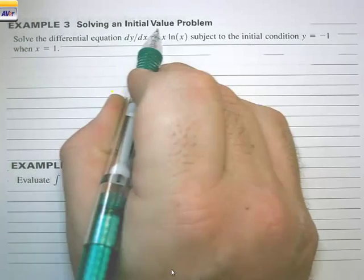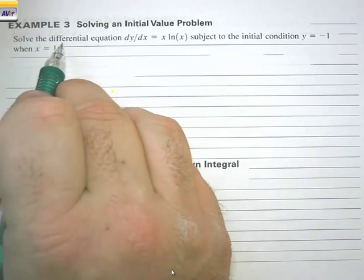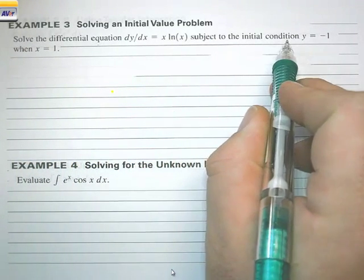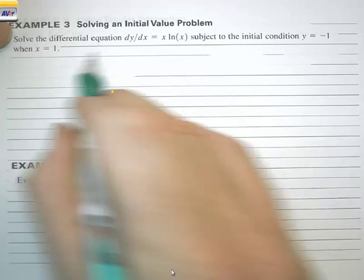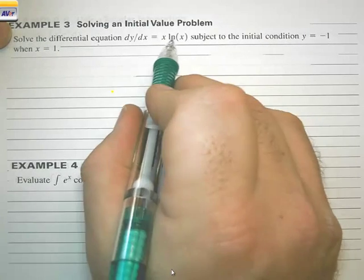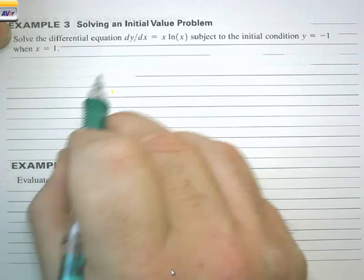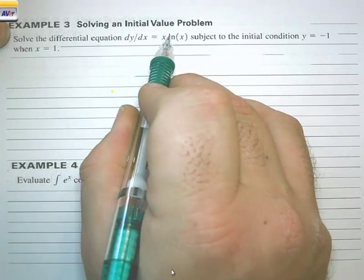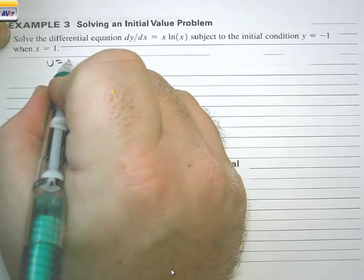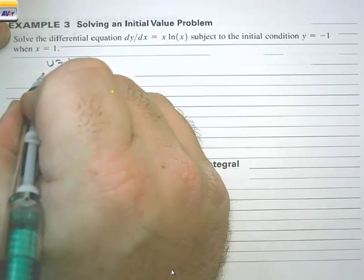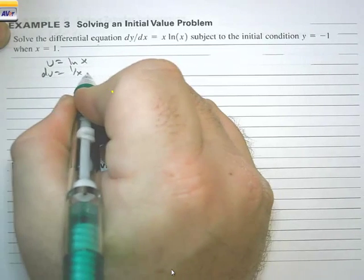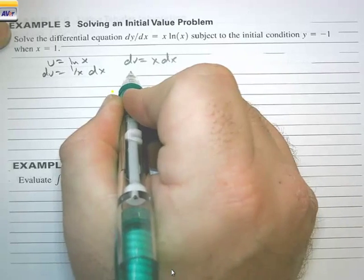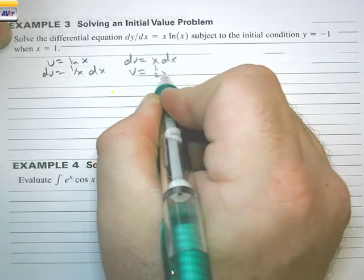Example 3: solving an initial value problem. Solve the differential equation dy/dx equals x·ln(x), subject to the initial condition y equals negative 1 when x equals 1. Normally we would pick u equal to x, but we don't know how to integrate ln(x), so we let u equal ln(x), giving du equals (1/x) dx. We let dv equal x dx, and then v equals (1/2)x².